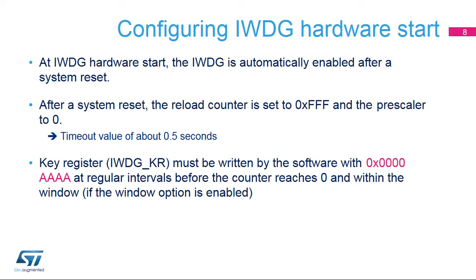The Independent Watchdog hardware is enabled by the device's option bytes. If the hardware mode is enabled, after every system reset, the watchdog automatically loads the counter with 0xFFF and starts to count down. The prescaler is set to zero, providing a division by four on the input clock. To prevent any reset, the key register must be refreshed at regular intervals before the counter reaches zero and within the time window, if this option has been selected. Considering that the LSI1 or LSI2 clock frequencies are at exactly 32 kHz, the application has about 0.5 seconds to refresh the IWDG before the generation of a watchdog reset.